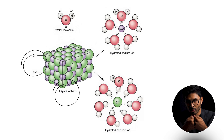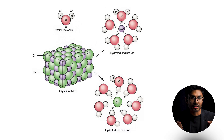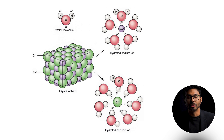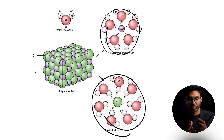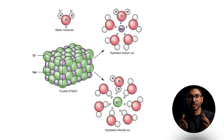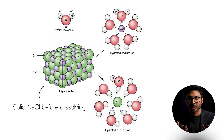The slightly positive hydrogen side of water is attracted to the chloride, and the slightly negative oxygen side of water is attracted to the sodium Na+. In the second step, hydration shell formation occurs — water molecules surround the individual Na+ and Cl− ions, forming a hydration shell. This breaks the strong ionic bond between the ions and keeps them dissolved in solution without them rejoining each other as they were in the solid.